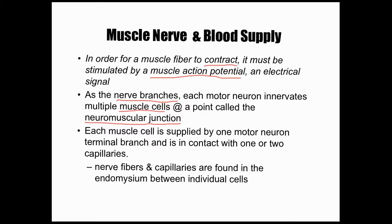Each muscle cell or muscle fiber is supplied by one motor neuron, and it's also going to be in contact with one or two capillaries that bring the blood supply and oxygen. Those capillaries remove waste like carbon dioxide and bring things the muscles need, especially oxygen and glucose. Glucose in the presence of oxygen, with mitochondria, gets converted into ATP energy — and it's that ATP energy that allows the muscles to contract, which allows the body to move.